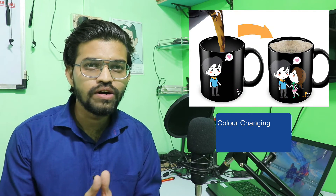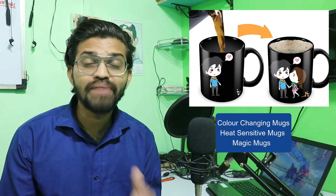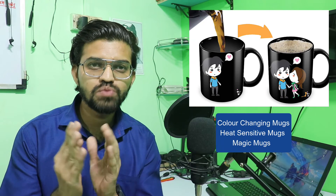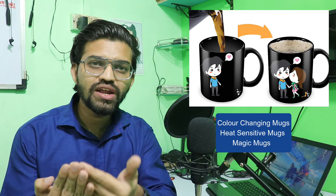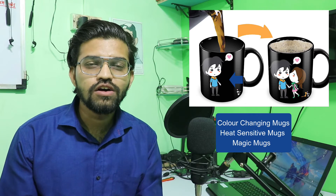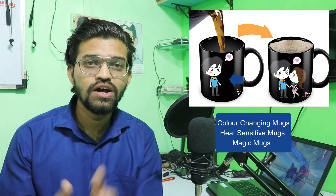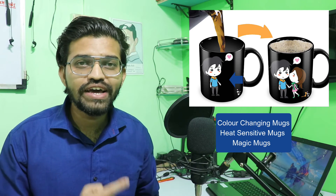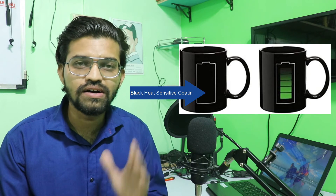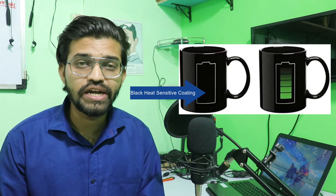Here is an interesting fact: you must have heard about color-changing mugs, heat-sensitive mugs, typically called magic mugs. A magic mug has an image painted on a simple mug, and that image is covered with a black heat-sensitive paint. So the original image is hidden under the black coating. For example, here you can see the green color is the first coat, and on top of that the black heat-sensitive coating is applied.